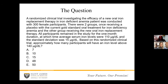The question that was asked is: a randomized clinical trial investigating the efficacy of a new oral iron replacement therapy in iron deficient anemia patients was conducted with 300 female participants. There were two groups — one receiving a placebo with the current gold standard oral treatment for iron deficiency anemia, and the other group receiving the new oral iron replacement therapy. All participants remained in the study for the one-month duration, at which time average serum iron levels were 110 micrograms per deciliter, and the standard deviation was 15 micrograms per deciliter. Based on this randomized clinical trial, approximately how many participants will have an iron level above 140 micrograms per deciliter? Choice A: 7. Choice B: 10. Choice C: 15. Choice D: 48. Or choice E: 50.